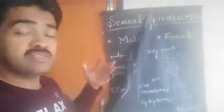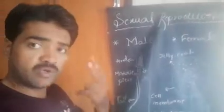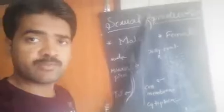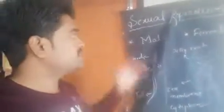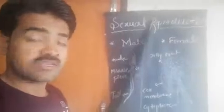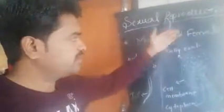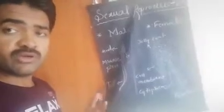In reproduction there are two types, which we have already studied: sexual reproduction and asexual reproduction. In sexual reproduction we have to differentiate the characters of male and females. In the male we can see the sperm, and in the female we can see the eggs. These are the sex cells, and because of these two cells, fertilization and reproduction is going to take place.